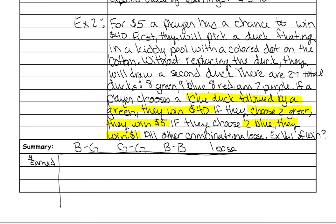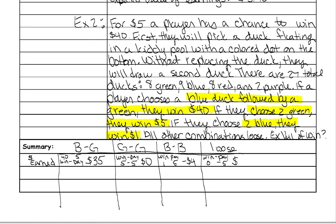The money earned: to get a blue and then a green, remember it's win minus how much you pay to play. You won $40 but paid $5 to play, so you really only earn $35. For green then green, you win $5 but you paid $5, so you actually earn no money. For blue then blue, you win $1 but paid $5 to play, so you lose $4. And lastly if you lose, you win nothing and paid $5, so you lose $5.